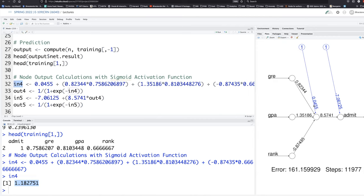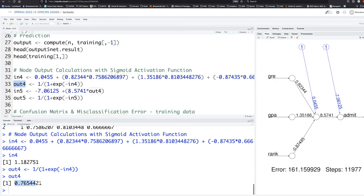So if you run this and select and run, you get 1.182751. That's the value based on all these weights and the bias term and the actual values from the input layer. Now, how is the output of node four calculated? I have given here 1 divided by 1 plus exponential of negative of the value that we got earlier. So if you run that and check out four, we get a value of 0.765421. Based on this model, that's the output of node four.